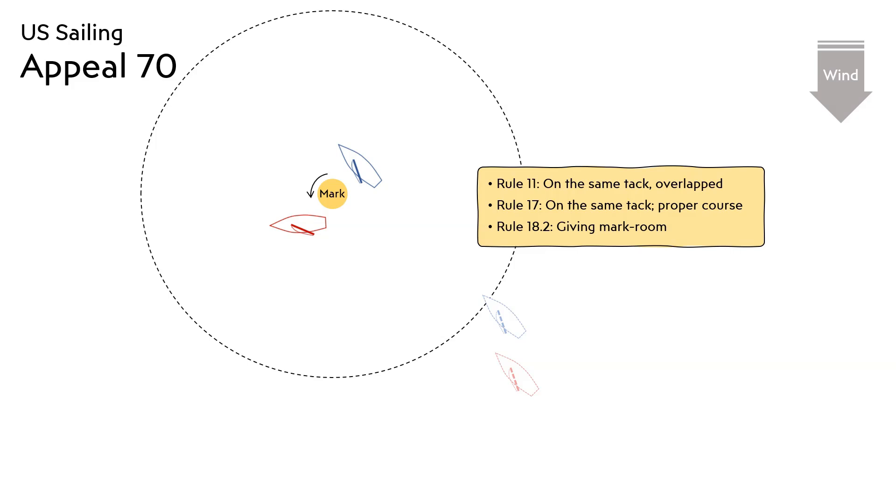Concluding that the blue boat failed to keep clear, thereby forcing the red boat to bear off below the mark. The blue boat claimed that the red boat had sailed above close-hauled and appealed the case.